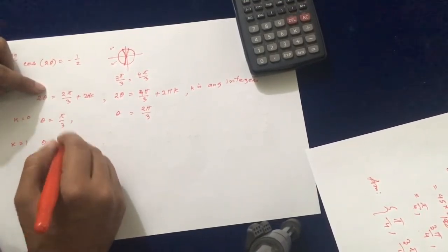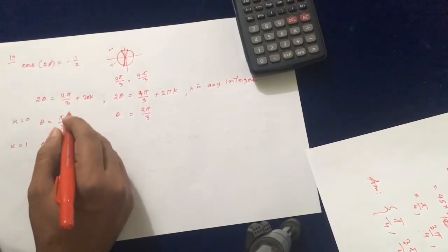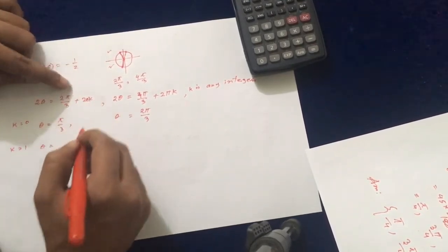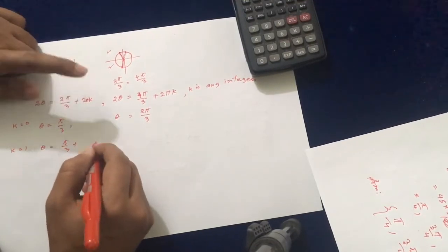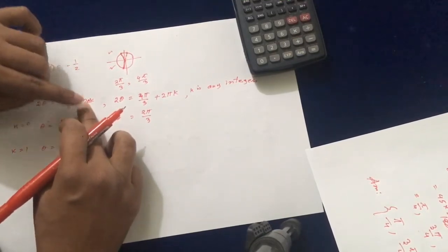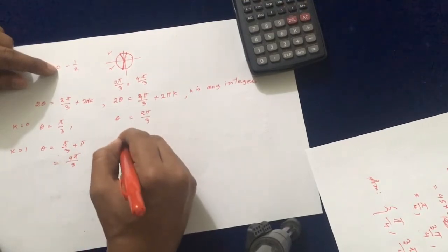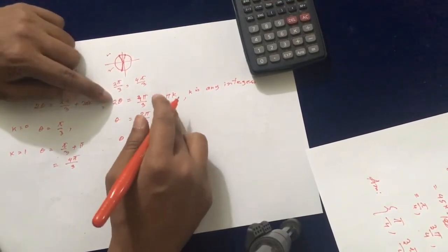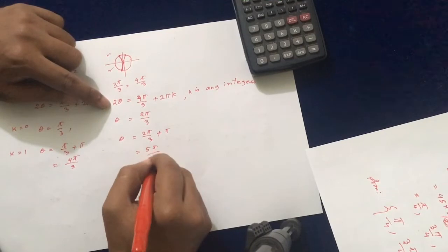Now let's put k = 1. For the first formula: θ = π/3 + π = 4π/3. For the second formula: θ = 2π/3 + π = 5π/3. So we get two more answers: 4π/3 and 5π/3.